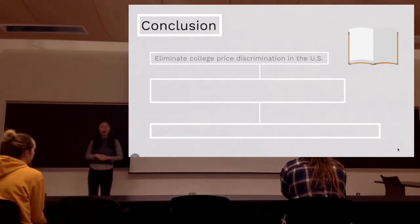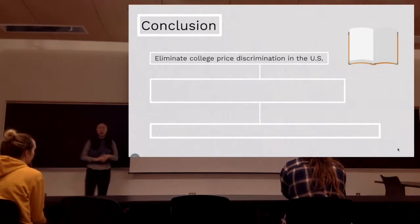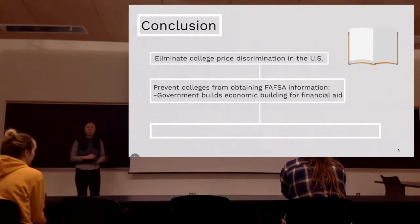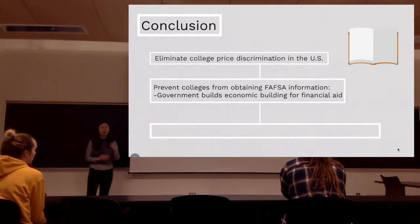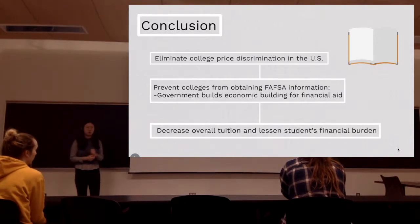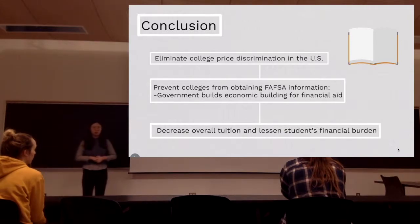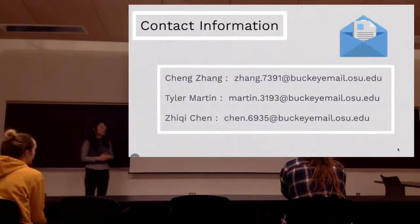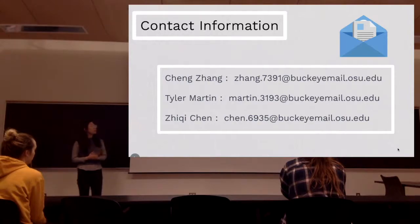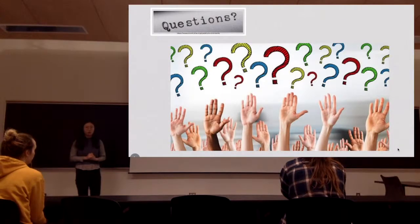To conclude, the purpose of our proposal is to eliminate college price discrimination, and our solution is to have the government build an economic department and use an automated system to distribute federal student aid. We hope that in doing so, we can decrease overall tuition and alleviate students' burden for college tuition. If you have any questions, feel free to contact one of us.